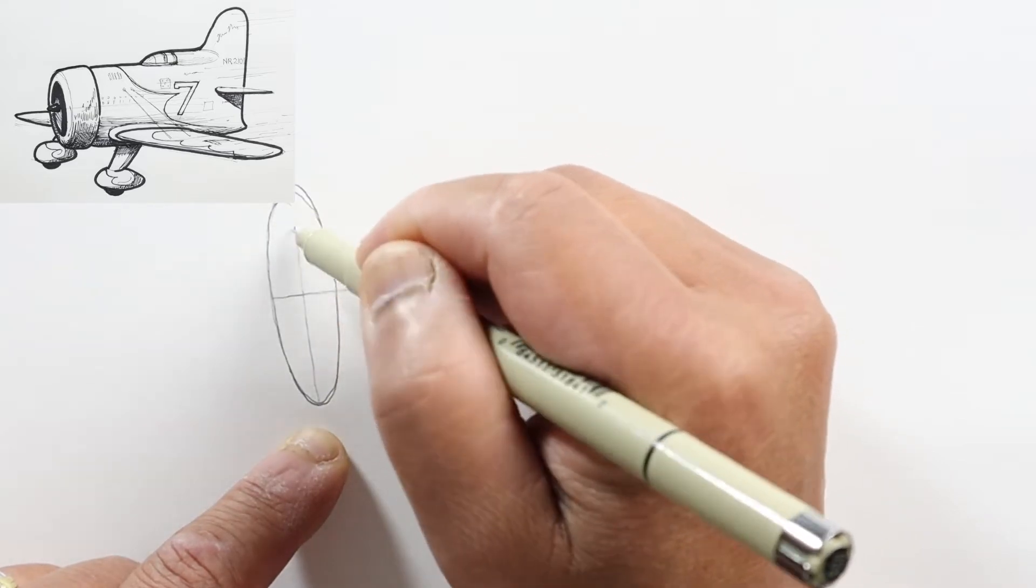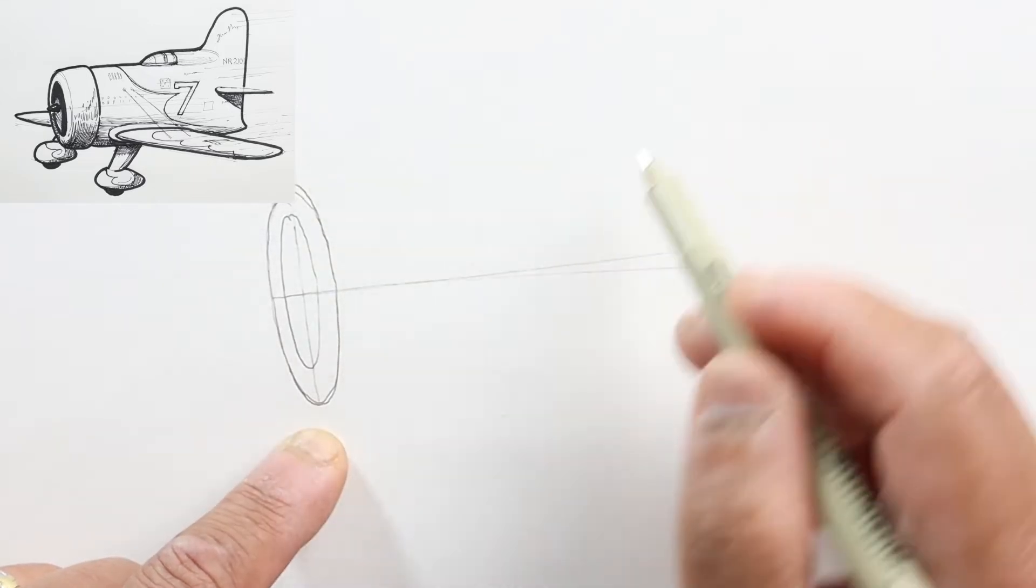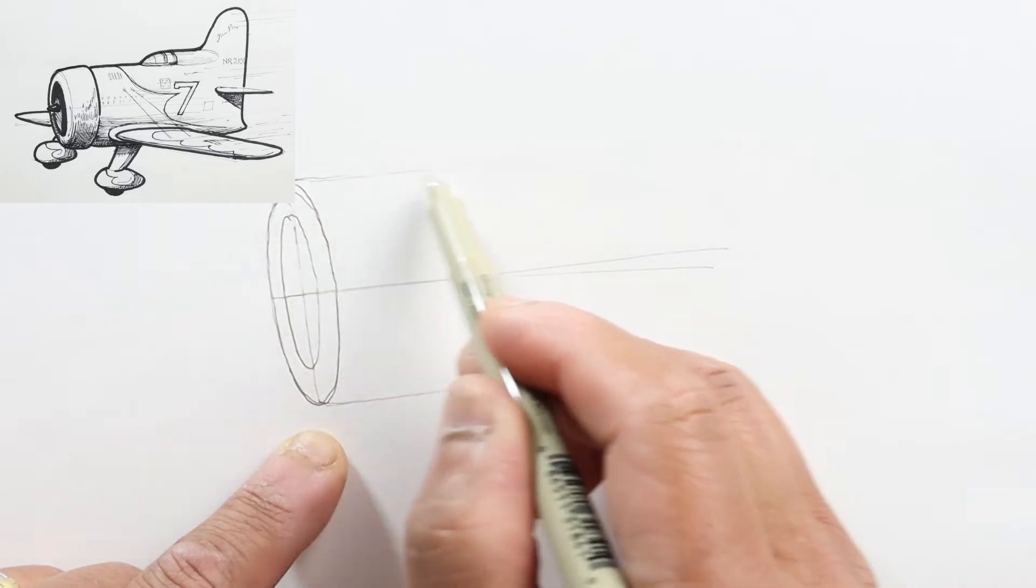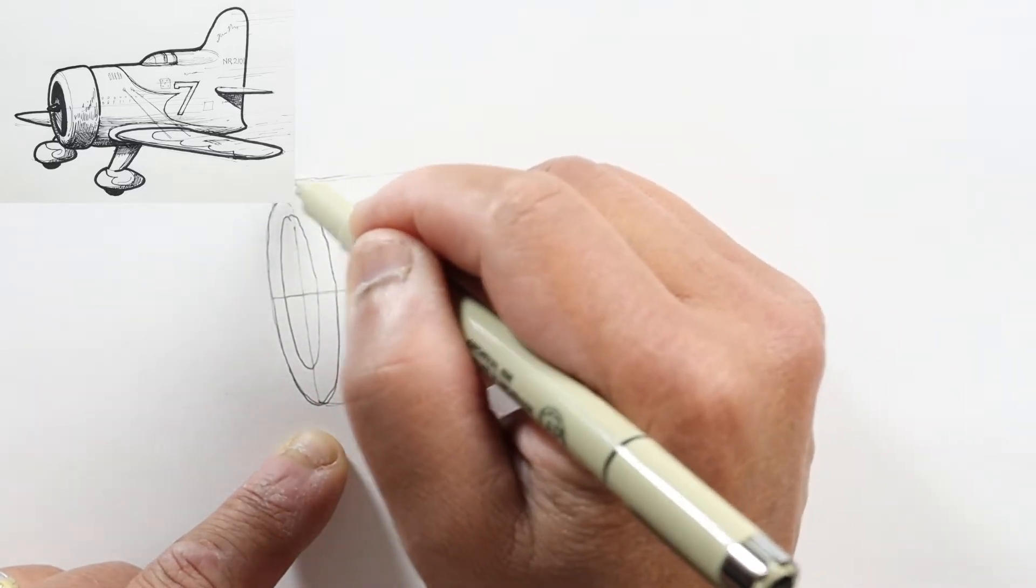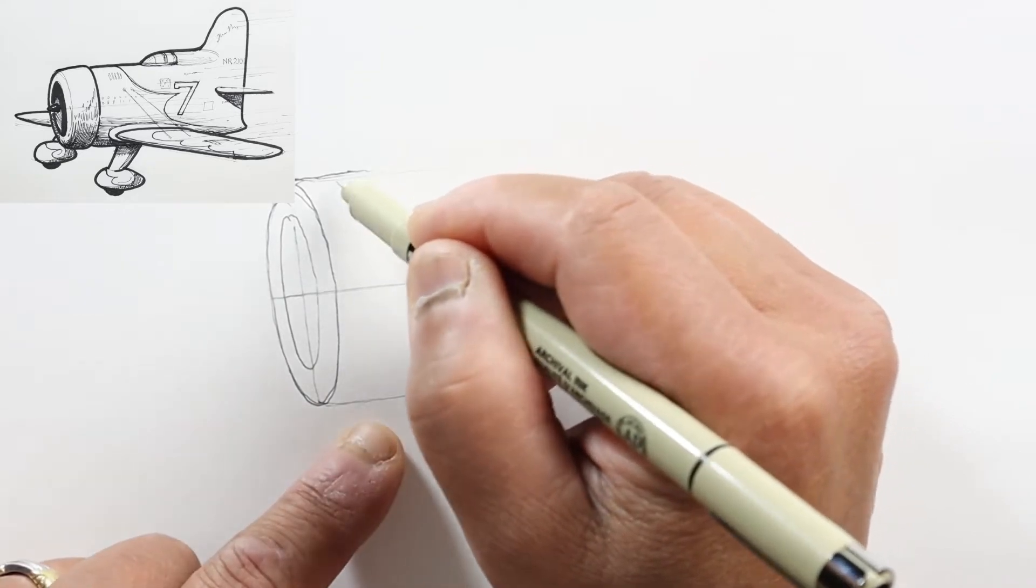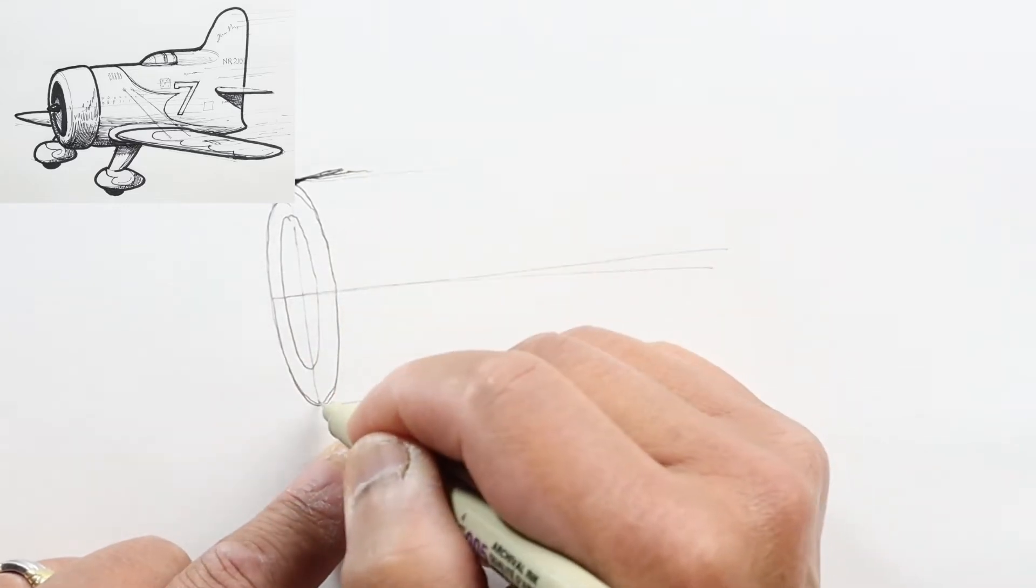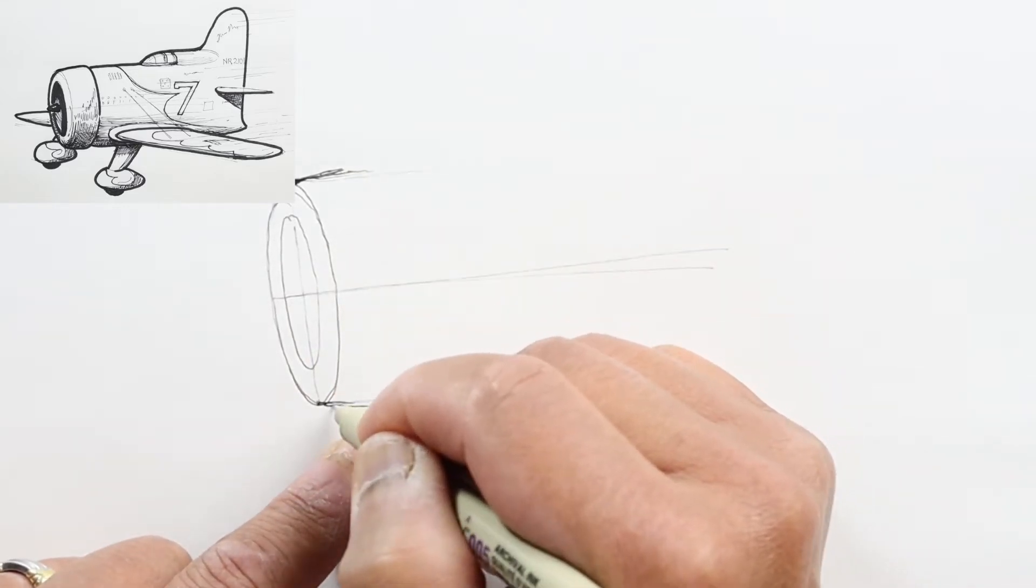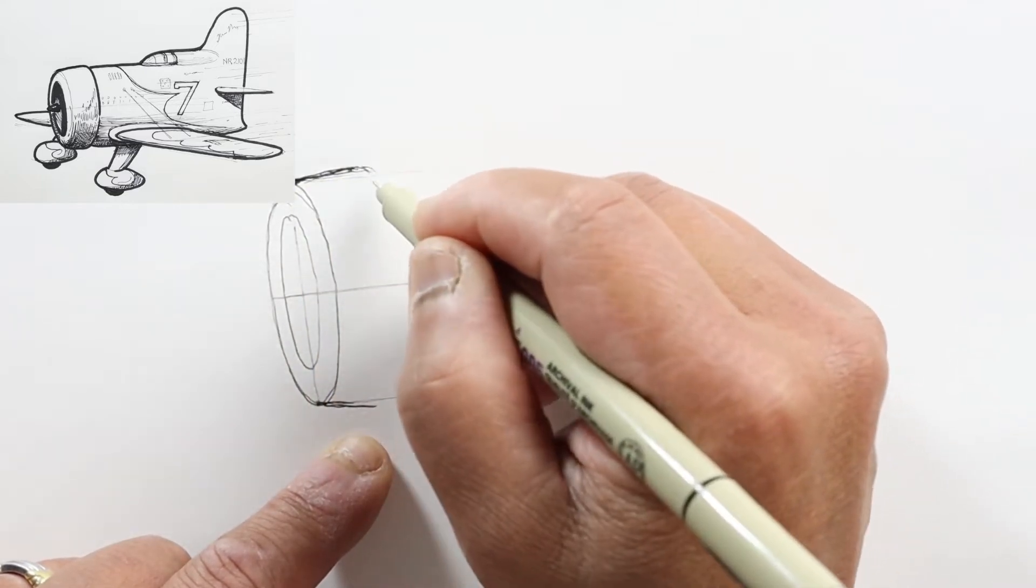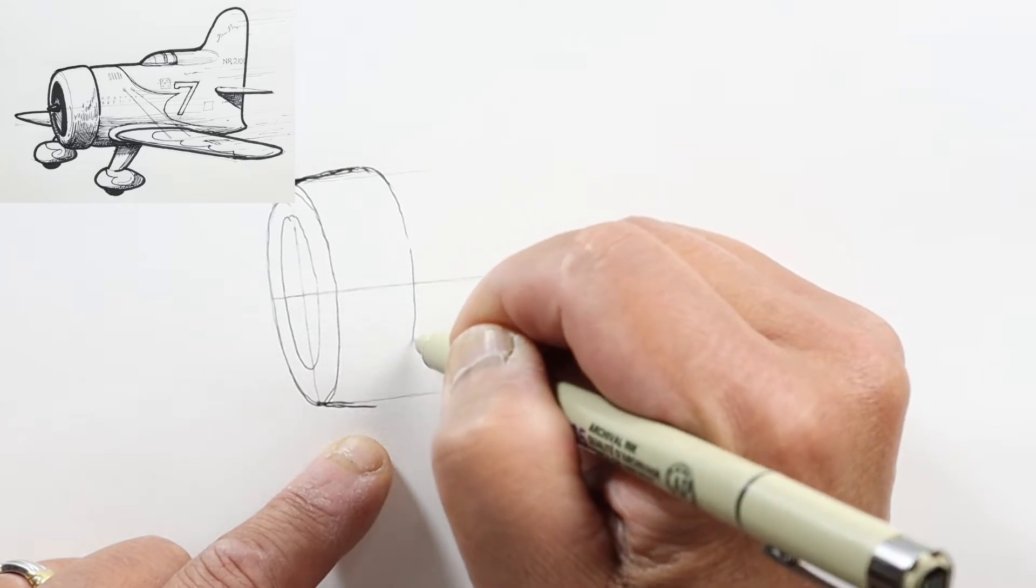Inside this oval, let's draw another oval, and here's our cylinder. Then we'll draw parallel lines that go out, and draw another line just behind here. We're going to taper this out a little bit to show there's some roundness to it, and draw another line back here.